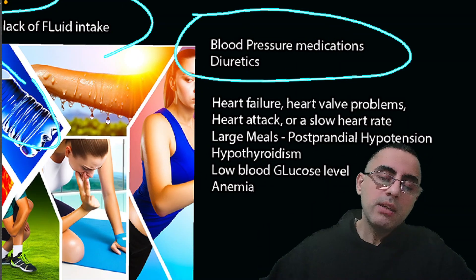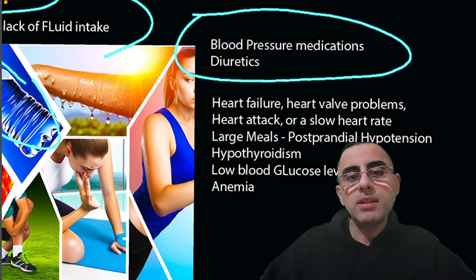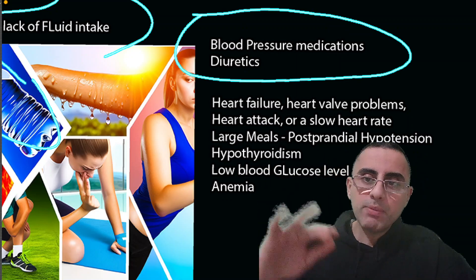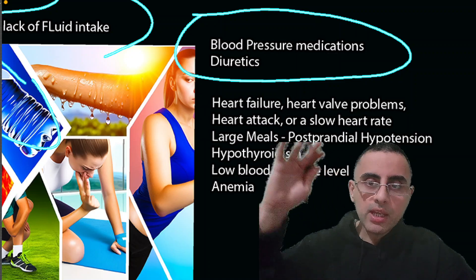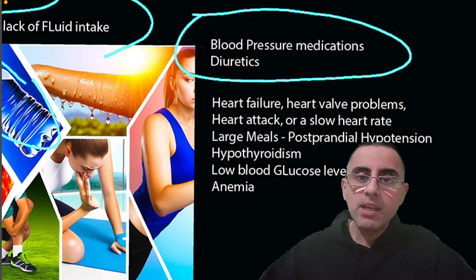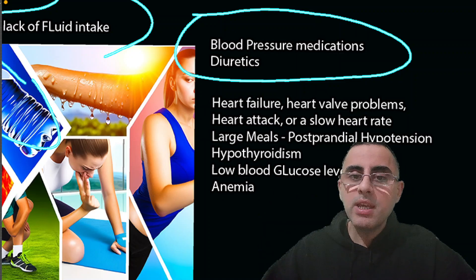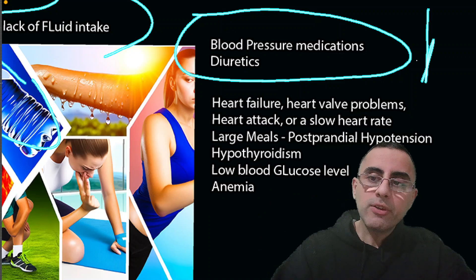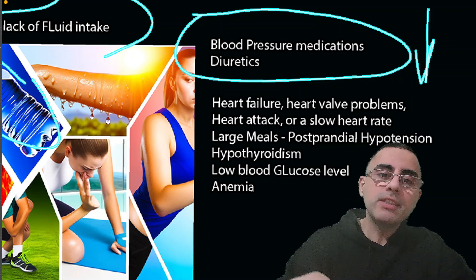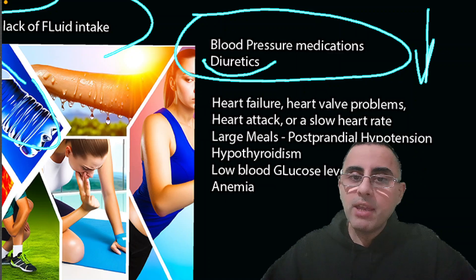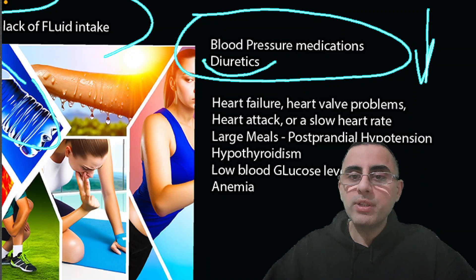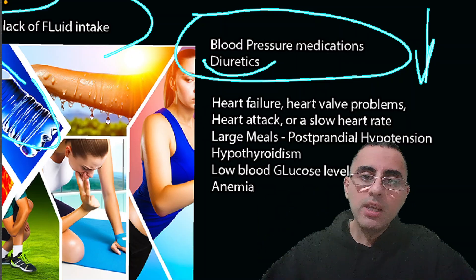Medications are also a common cause. Blood pressure medications can cause low blood pressure — the opposite of the intended effect. If a person with high blood pressure takes medication for it, the medication can drop blood pressure significantly. Diuretics, which increase urine volume, can also cause fluid loss and lead to low blood pressure.